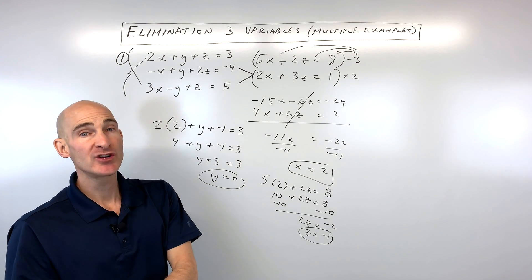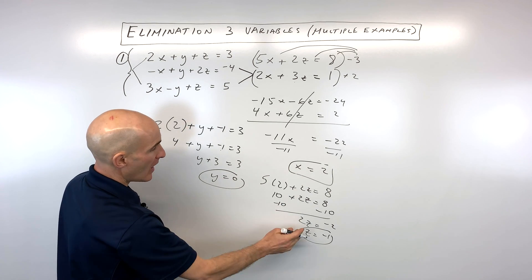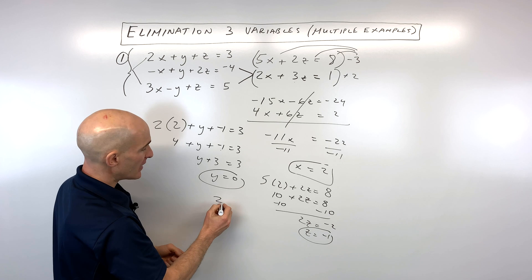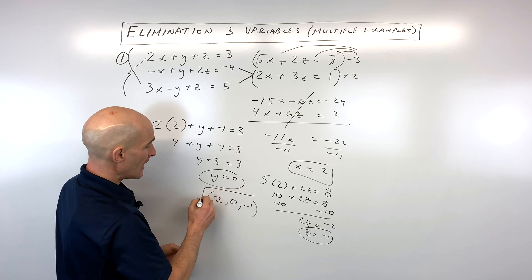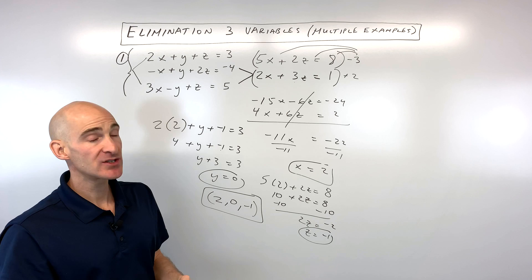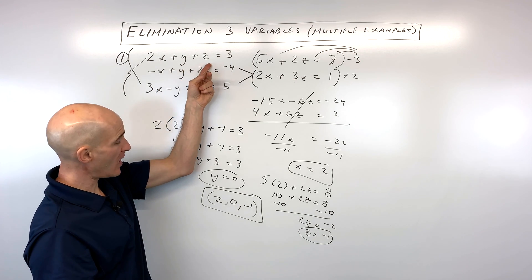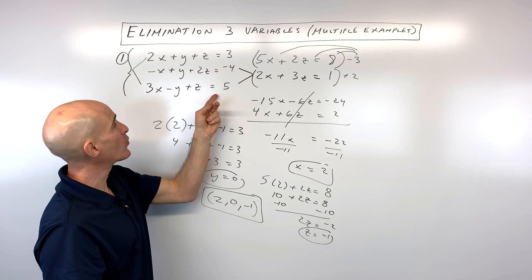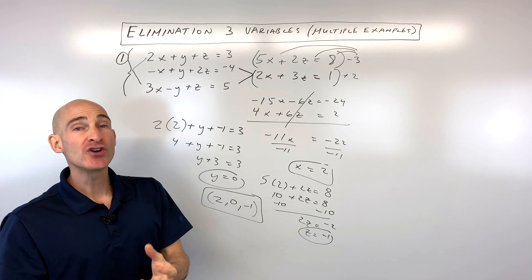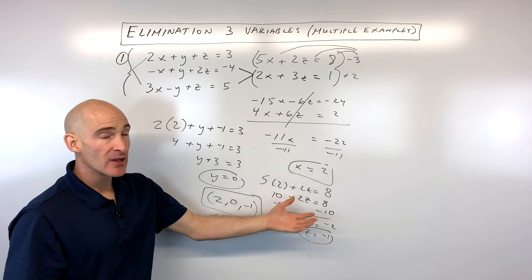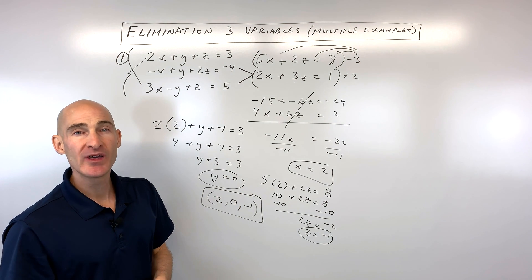Now we write our solution as a triple in alphabetical order — x, y, z — which gives us 2, 0, negative 1. If you want to check your work, put 2 in for x, 0 in for y, and negative 1 in for z in each of the original equations — you should get 3, negative 4, and 5, which makes all the equations true. Let me erase the whiteboard and we'll do another example.